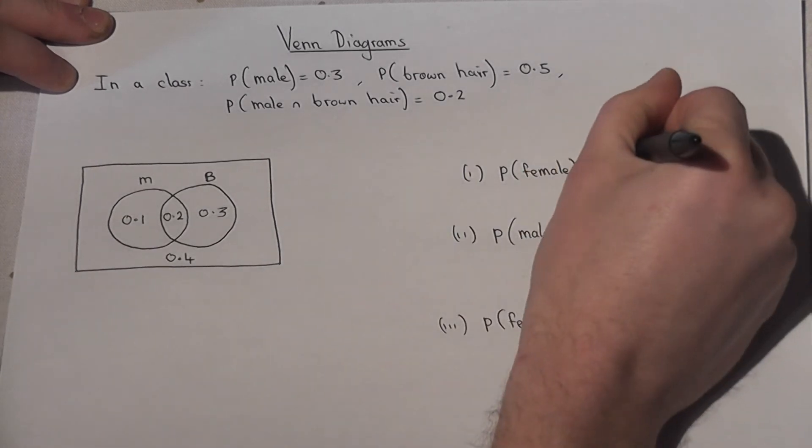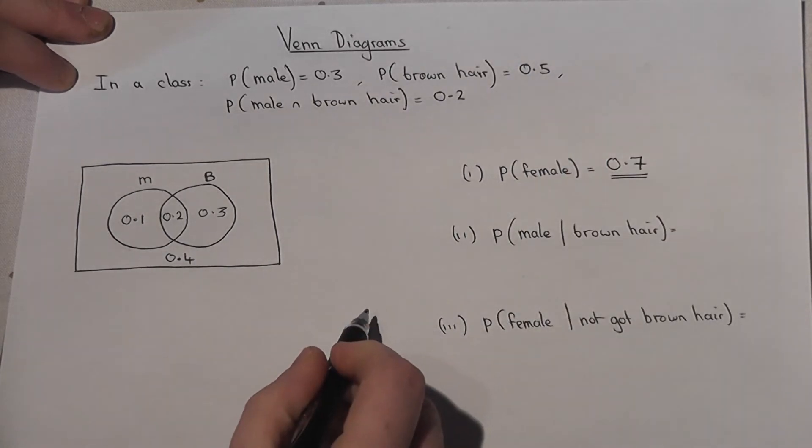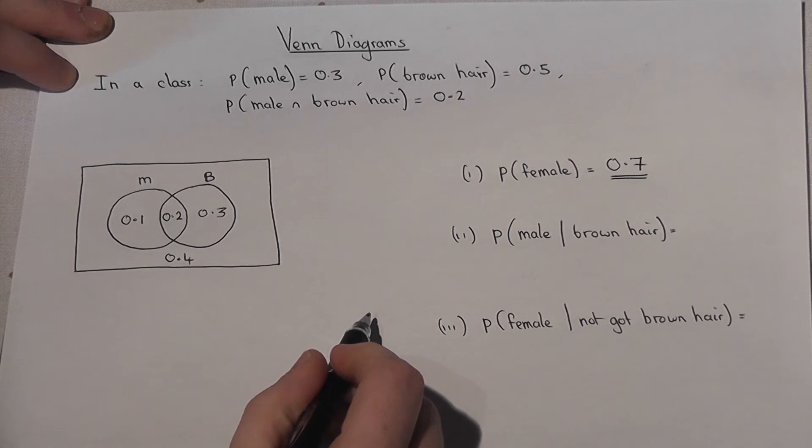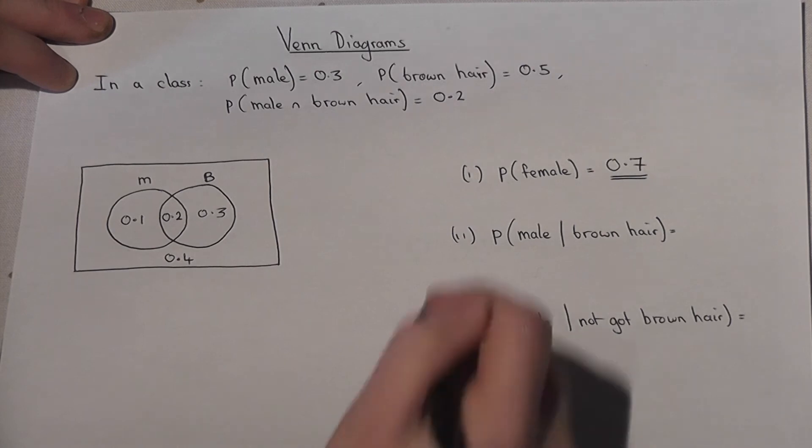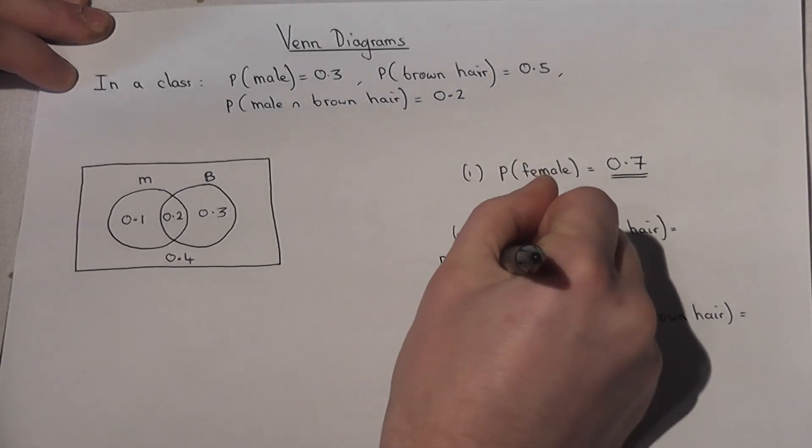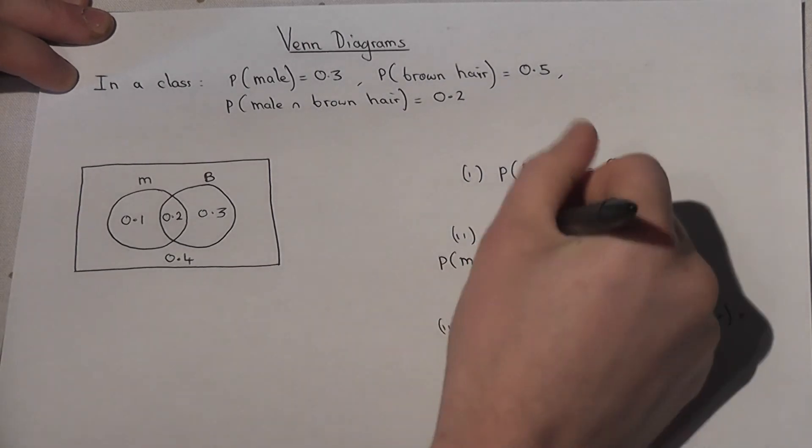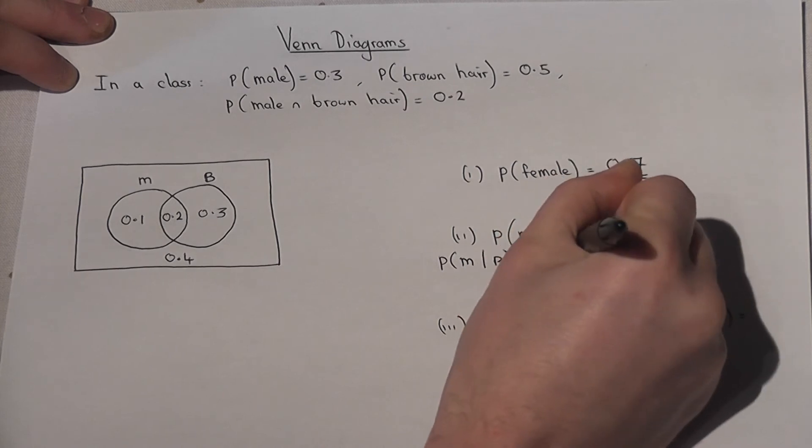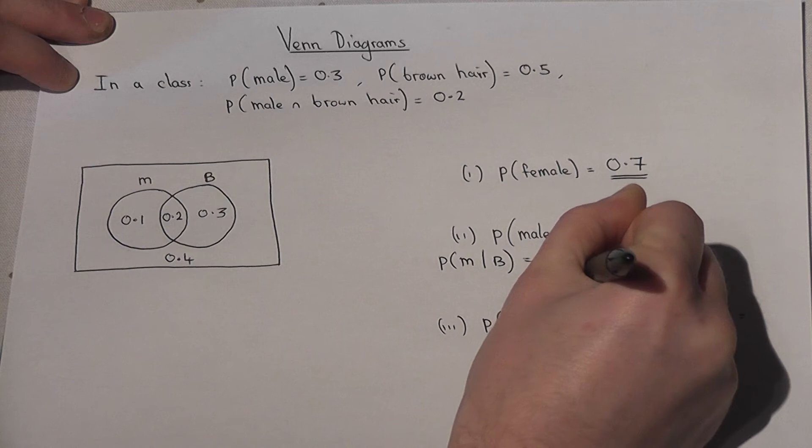Now part two then looks at conditional probability: the chance of being male given the fact the person has brown hair. But there is a formula for this: it is M and B over the chance of B.